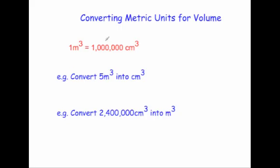So the conversion rate is: one meter cubed equals one million centimeters cubed. Let's do a question — convert five meters cubed into centimeters cubed. To go from meters cubed to centimeters cubed, we multiply by a million, so five times a million equals five million centimeters cubed.